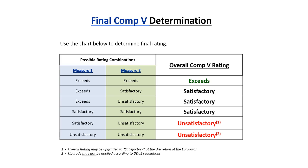Should such a split rating occur, the evaluator may ask the educator to provide additional evidence for consideration during the upgrade deliberation. When both measures are unsatisfactory, upgrades are not allowable per DOE regulations. This concludes the overview on Measure B pre/post test rating determination.